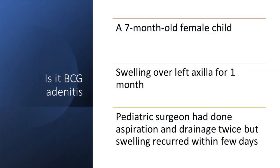BCG adenitis: if the swelling is small and non-fluctuant, just observe. If it becomes fluctuant, aspirate and drain — don't do incision and drainage, and no anti-TB therapy is needed. If it refills, repeat drainage. ATT is only considered if excision has been done and the gland or pus refills again. Remember: BCG is resistant to pyrazinamide, so don't add PZA when treating BCG adenitis. BCG adenitis can appear up to two to three years post-BCG vaccination.